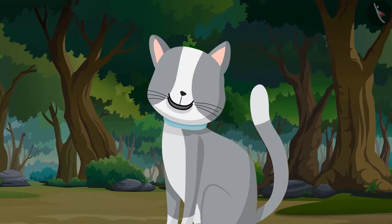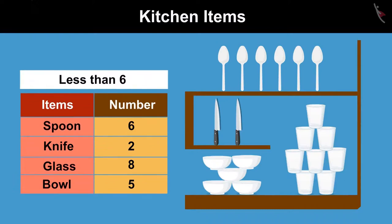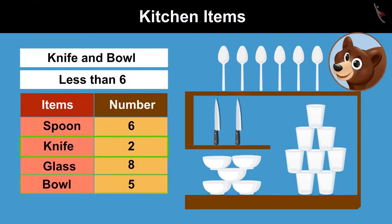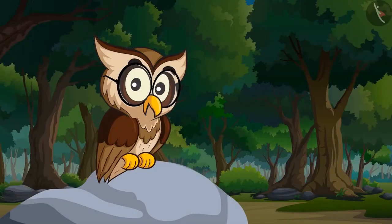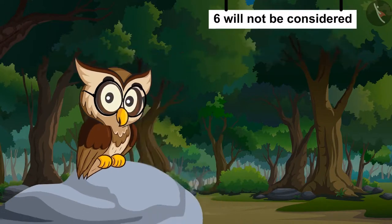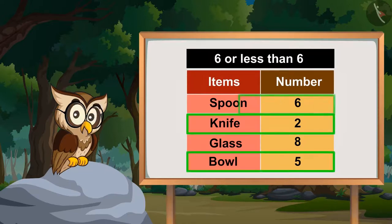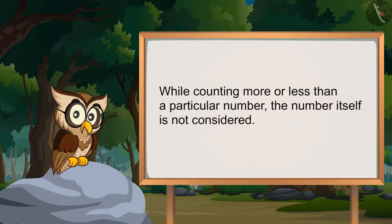Oh, now I get it. So, now can you tell me which kitchen item is less than 6 in number? Knife and bowl. Absolutely right. While counting less than a particular number, the number itself is not considered. Similarly, if we look at the number of items which are either 6 or less than 6, we will get knife, bowl, and spoons.